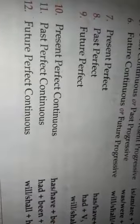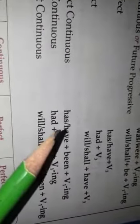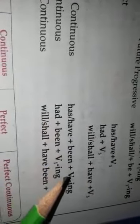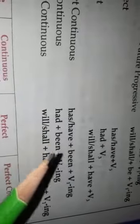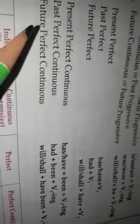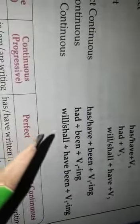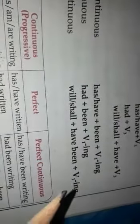And the third group: present perfect continuous, past perfect continuous, and future perfect continuous tense. For present perfect continuous: has/have plus been plus verb 1 plus ing. For past perfect continuous: had plus been plus verb 1 plus ing. For future perfect continuous: will/shall plus have been plus verb 1 plus ing.